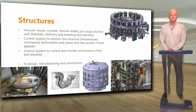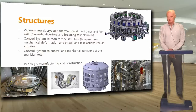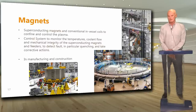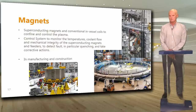Then we have the big structures: vacuum vessel, cryostat, thermal shield and so on. Here the control system cannot control anything, but we need to monitor the structure — temperatures, mechanical deformation, stress and so on. Of course we have the superconducting magnets and the conventional in-vessel coils. The control system needs to monitor temperature, coolant flow, mechanical integrity and feeders, and detect faults — in particular quenching, when superconductivity is lost — and take corrective actions. The three main magnet systems are: a toroidal field coil, a poloidal field coil, and a central solenoid unit.